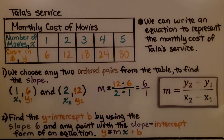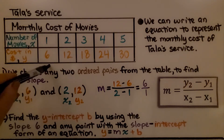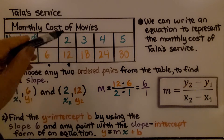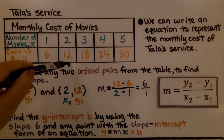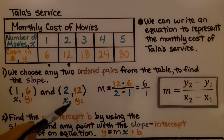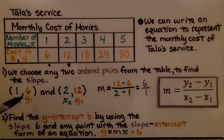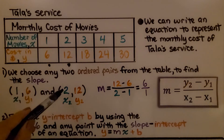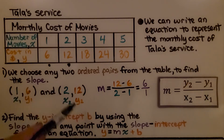We can write an equation to represent the monthly cost of Tala's service. We choose any two ordered pairs from the table to find the slope. I chose this one and this one — this will be our second, and this will be our first. We have x1, y1 and x2, y2. This is our first x, this is our first y, this is our second x, and this is our second y.